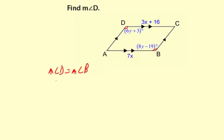So then we can just say simply 6y plus 3 equals 8y minus 19. Now we can solve for y and then figure out the measure of angle D.